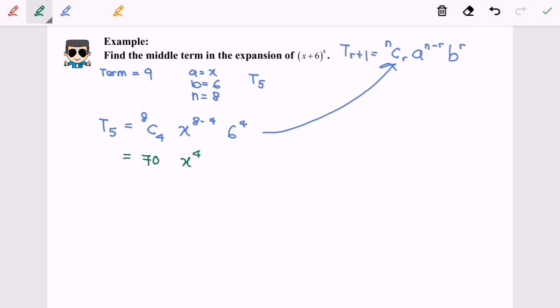6 to the power of 4 will be 1296. We are going to expand or multiply. So finally we will have 90720 x to the power of 4 for the fifth term, or the middle term.